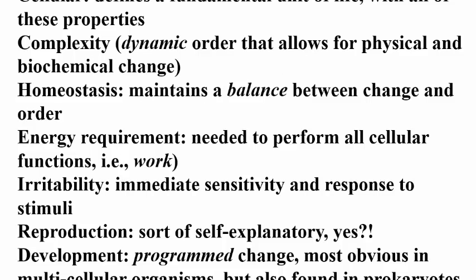Abiogenesis occurs when an entity — a cell — existed that possessed all of the properties of life listed in this slide. Read through this list of properties on your own and what these properties accomplish for cells and organisms. Note that in the title of this presentation I said 'origins' — that's plural — on the grounds that if prebiotic conditions could have supported the origin of the first cell, then why not spawn more than one first cell? So let's begin our exploration of how life began.